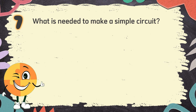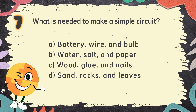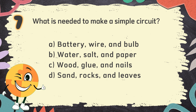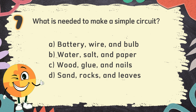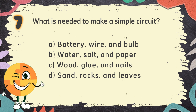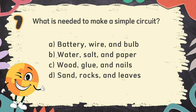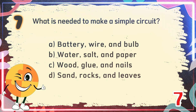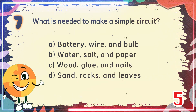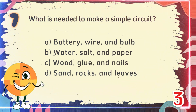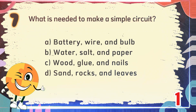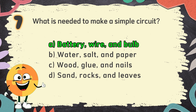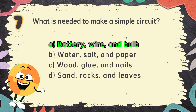The choices are: A. Battery, wire, and bulb, B. Water, salt, and paper, C. Wood, glue, and nails, D. Sand, rocks, and leaves. The correct answer is A. Battery, wire, and bulb.